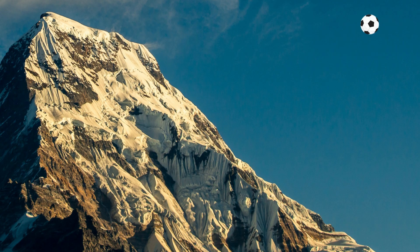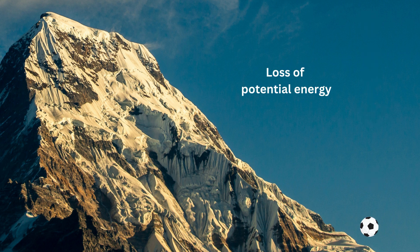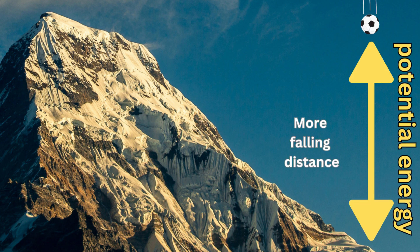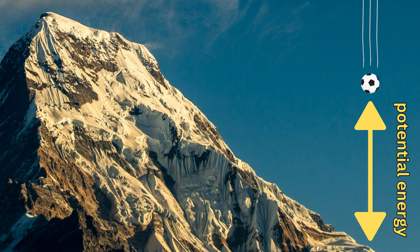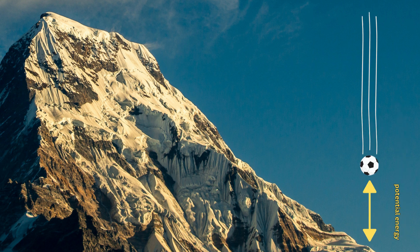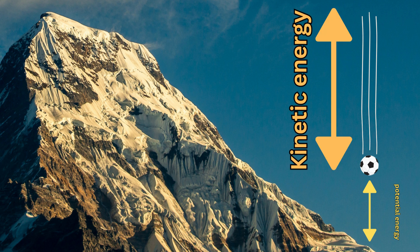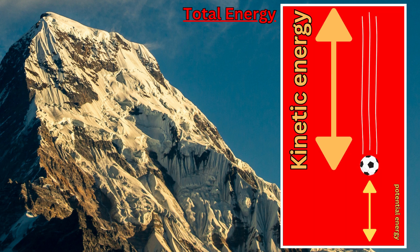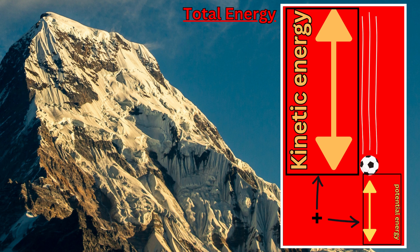For instance, when a ball is dropped from a height, the ball loses potential energy as it falls. The higher the ball, the more falling distance the ball has, which is its greater potential energy. As the ball falls, its distance to the bottom continually becomes shorter, therefore losing its potential energy as it descends. But this loss of potential energy is perfectly offset by an increase in kinetic energy, or movement energy, as the ball continues. The ball's total energy — kinetic energy plus potential energy — is constant throughout its fall.